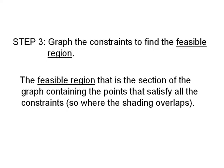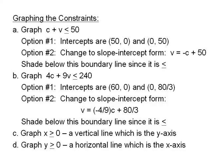The feasible region is the section of the graph containing the points that satisfy all of the constraints. In our linear programming problems, our constraints are inequalities. Therefore, our feasible region will always be a shading region, the shaded region that is the overlap of all of the constraints. To graph the constraints in our particular problem, we have lots of options.